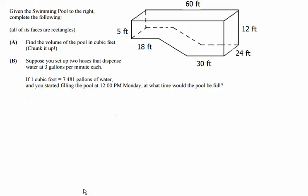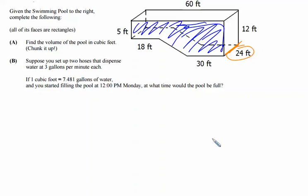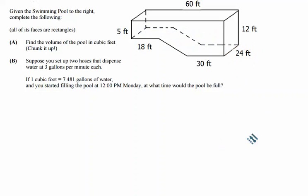But really the key to the problem is identifying the fact that this shape right here that I'm scribbling in blue will be the base to the prism. The distance between the bases will be the 24 right here, but we really need to find the area that I've scribbled in blue. Now there's a variety of ways that you could partition that shape, or as we said in class, to chunk it up.